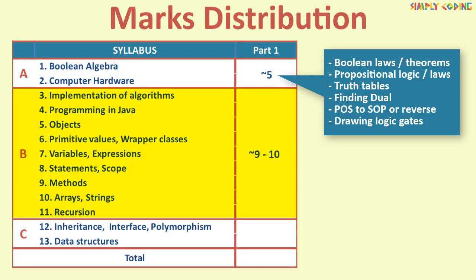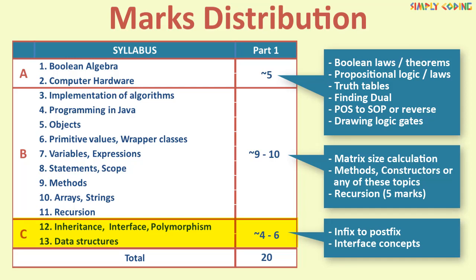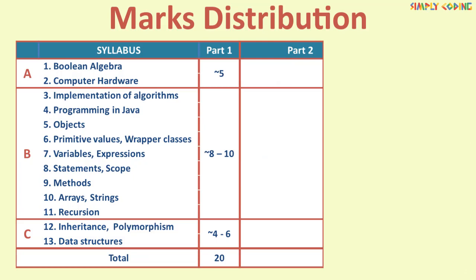Next 9 to 10 mark questions comes from section B. It will have around 2 questions which are 2 marks each on any of the topics in this section and there is 1 five mark question which is typically on recursion. Here you can definitely expect 1 question on matter of matrix size calculation and 2 to 3 other questions on methods, constructors and recursion. Section C holds 4 to 6 marks, mostly 2 to 3 two marks questions. Here 1 question is definitely expected on infix to postfix conversion. There used to be a question around complexity but since it is removed and only interface concepts remain, you can expect 1 theory question on interfaces.